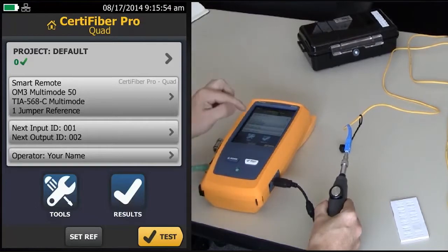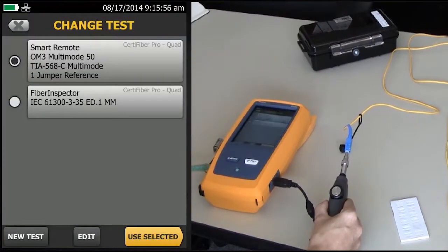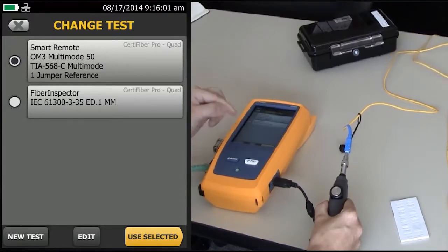From the home screen, I'm going to tap where my test limit is. And actually, I've got one here as a default in the instrument, but if I tap New Test...